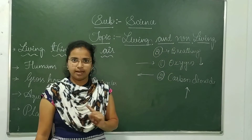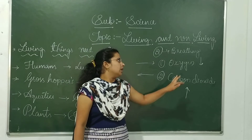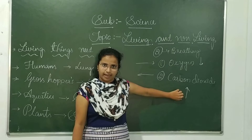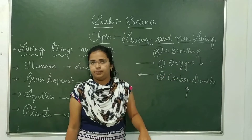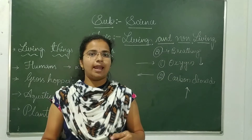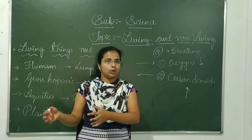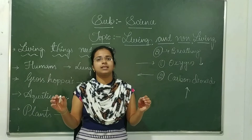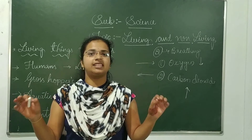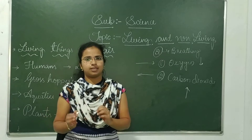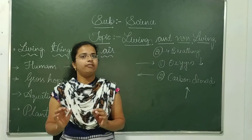Did you understand? Only at the time of photosynthesis, plants take in carbon dioxide and give out oxygen. So we should plant more plants, so that human beings and other breathing organisms can get a sufficient amount of oxygen to breathe and to maintain our health.